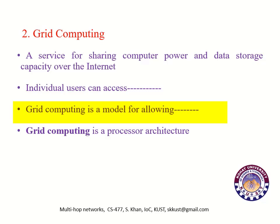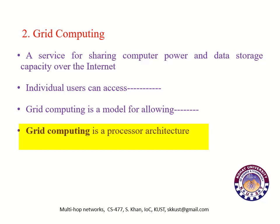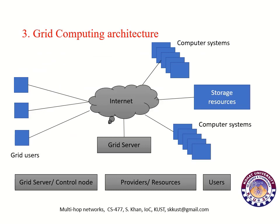In simple words, grid computing is a model for allowing companies to use a large number of computing resources on demand, no matter where they are located. We can also define grid computing as a processor architecture that combines computer resources from various network domains to reach a main objective. In grid computing, the computers on the network can work on a task together, thus functioning as a supercomputer.